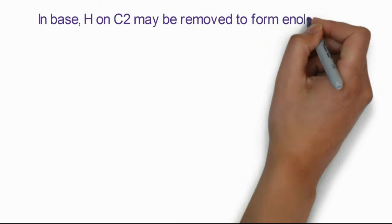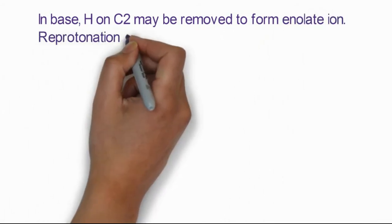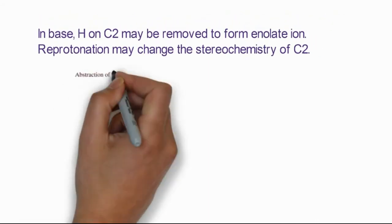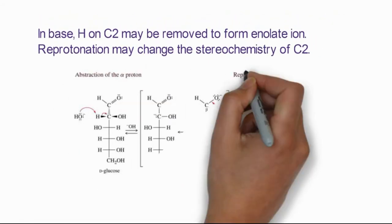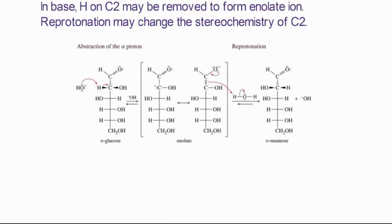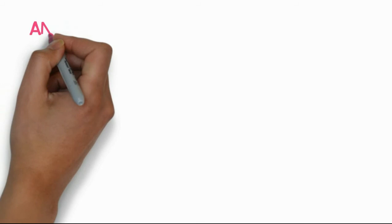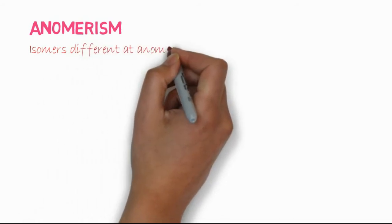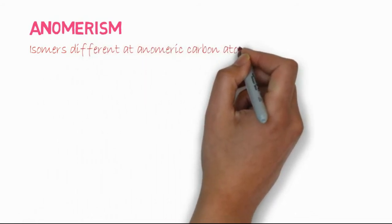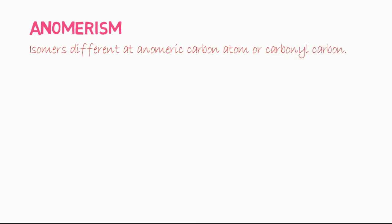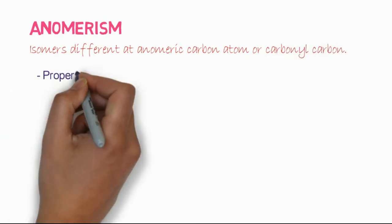This interconversion also occurs in the presence of chemicals like base, where hydrogen may be removed to form an enolate, and then reprotonation occurs, changing the stereochemistry of carbon number two. This is the mechanism. Next is anomerism — isomers which differ at the anomeric carbon, also called the carbonyl carbon, are known as anomers.